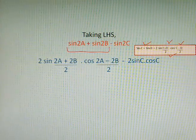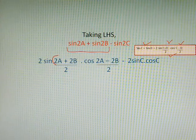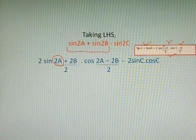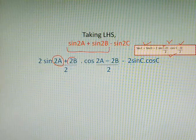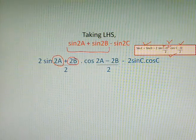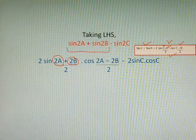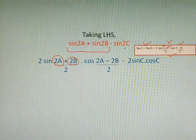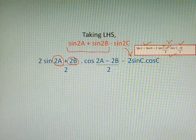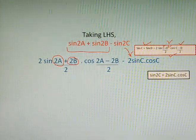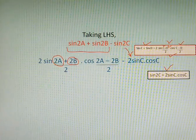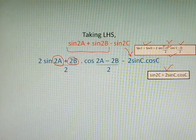Here you can say that 2A is kept in place of C and 2B is kept in place of D if we compare with the formula. And then sin2C can be written as 2sinC·cosC as it comes from this formula that you have learned in your class.